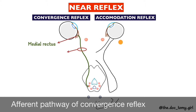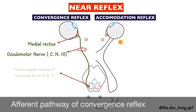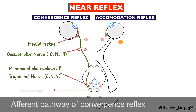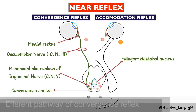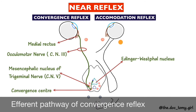The afferents travel via the third cranial nerve, that is the oculomotor nerve, to the mesencephalic nucleus of the fifth cranial nerve, that is the trigeminal nerve, to the presumptive convergence center in the pretectal region. From this, the impulse is relayed to the Edinger-Westphal nucleus, and the subsequent efferent pathway of the near reflex is along the third nerve, that is the oculomotor nerve.